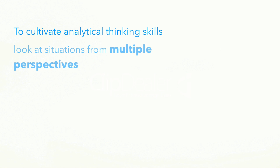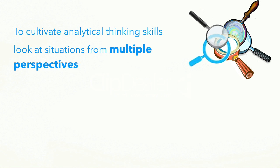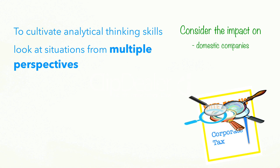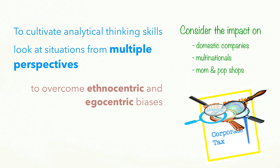To cultivate your analytical thinking skills, you should deliberately look at a situation from many different perspectives. For example, while considering the impact of a political party's election manifesto that promises higher corporation tax, look at its impact on small and large domestic companies, multinationals, and mom-and-pop shops. Multiple perspectives help overcome ethnocentric and egocentric bias and facilitate rational thinking.